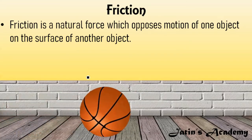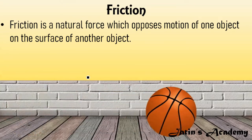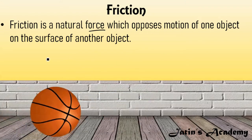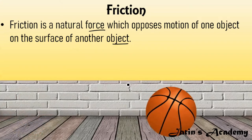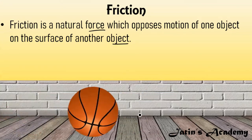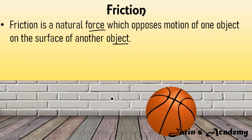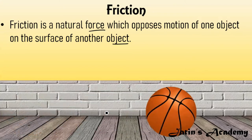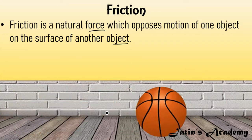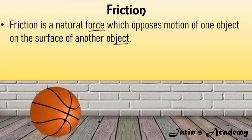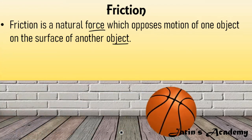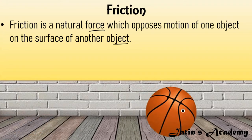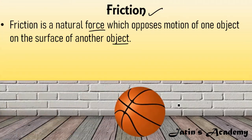Next we are having friction — this topic might be new for you. Friction is a natural force which opposes the motion of one object on the surface of another object. You might have seen this effect in daily life: when you throw a ball on a surface, that ball will stop after some time. The force which slows down the ball is nothing but frictional force, or friction.